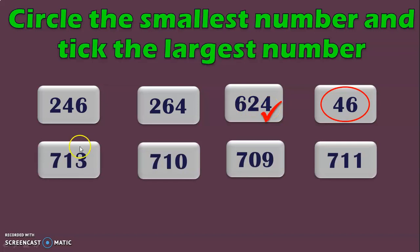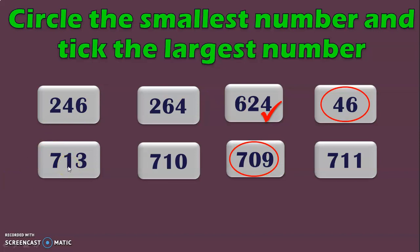Next example: all 4 numbers have 7 in the hundreds place. Look at the tens place where you have 1, 1, 0 and 1. We know 0 is the smallest, so 709 is the smallest number. To identify the largest, look at the remaining 3 numbers — their hundreds and tens places are the same. So look at the ones place where you have 3, 0 and 1. We know 3 is the greatest, so 713 is the largest number.